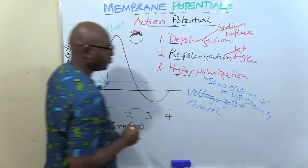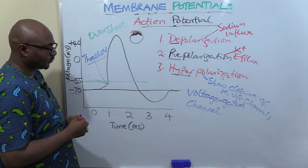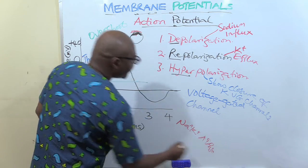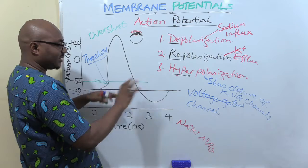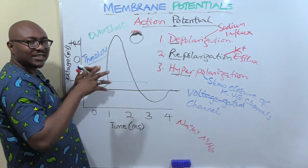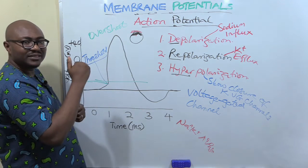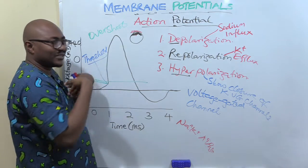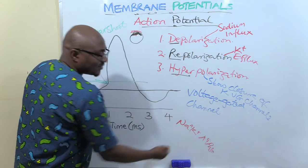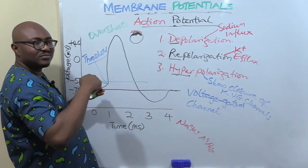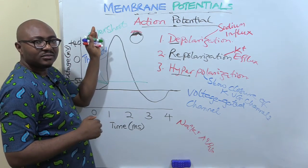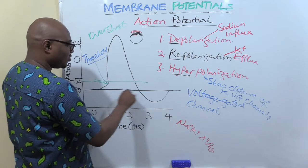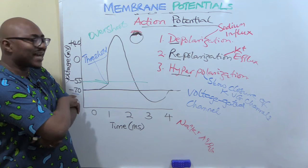The sodium-potassium ATPase restores everything back. Through its action of pushing sodium out and pumping potassium into the cell, it brings back more potassium — it pumps potassium into the cell and pumps sodium out, restoring the resting membrane potential. You can see it going back up to normal resting. This is what happens in action potential.